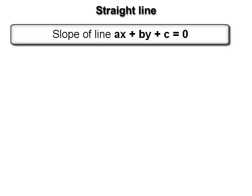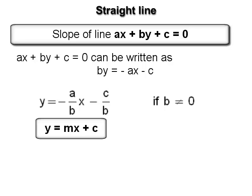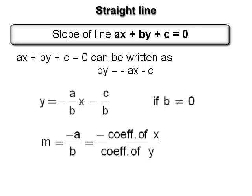Slope of the line ax + by + c = 0: the equation can be written as by = −ax − c. If b ≠ 0, dividing throughout by b gives y = (−a/b)x − c/b. This is of the form y = mx + c, where slope m = −a/b. We conclude that the slope of a line is m = −(coefficient of x) / (coefficient of y), provided the coefficient of y is not zero.